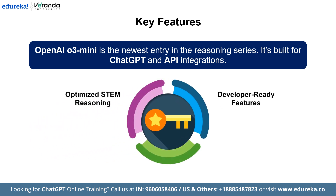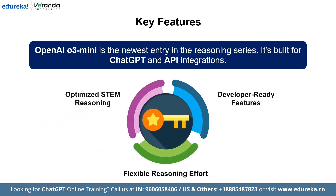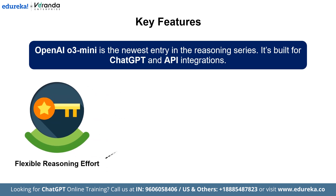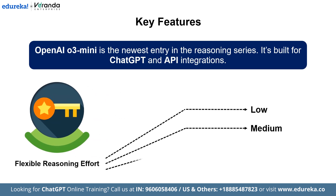Next is flexible reasoning effort. Developers can choose from three reasoning modes — low, medium, and high — allowing the model to think harder on complex tasks or prioritize speed when needed. While O3 mini maintains the low cost and reduced latency of its predecessor OpenAI O1 mini, it raises the bar in performance and developer versatility. Note that although O3 mini doesn't support vision capabilities, it's the perfect choice for pure reasoning tasks.